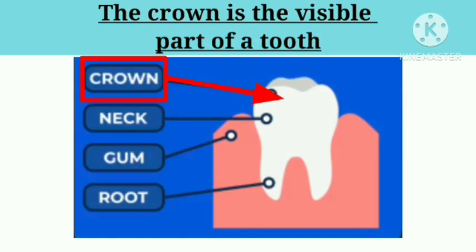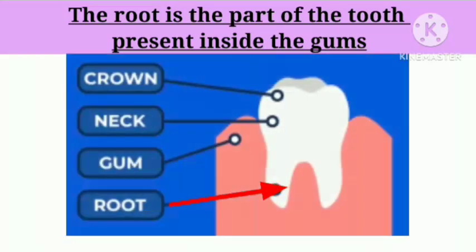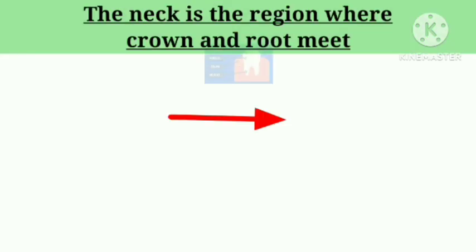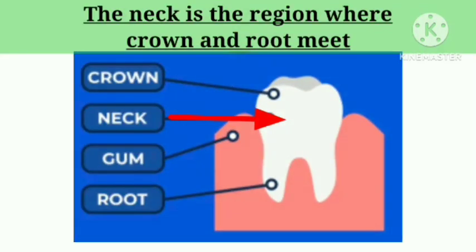The crown is the visible part of a tooth. The root is the part of the tooth present inside the gums. The neck is the region where the crown and root meet.